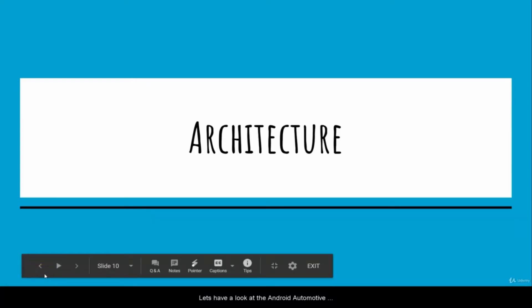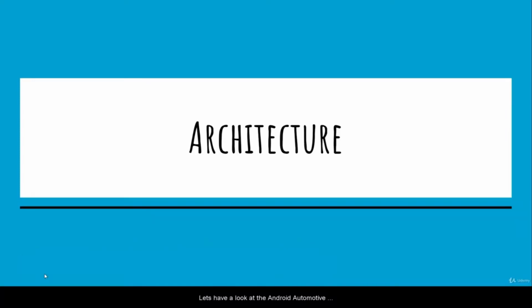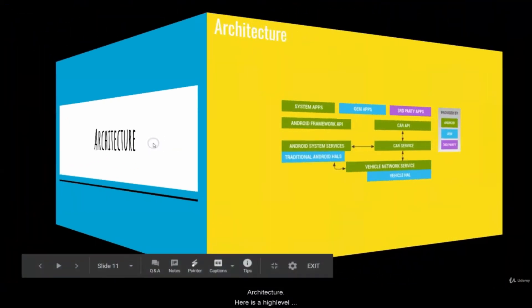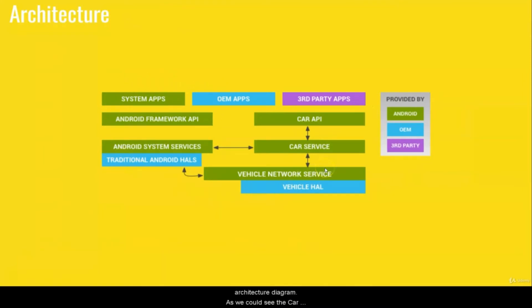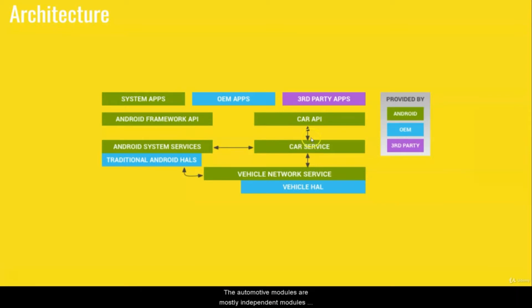Let's have a look at the Android Automotive architecture. Here is a high-level architecture diagram. As we can see, the car-specific modules are developed in parallel to the standard common Android modules. The automotive modules are mostly independent modules, but in some cases they might be extending base classes of standard Android modules.